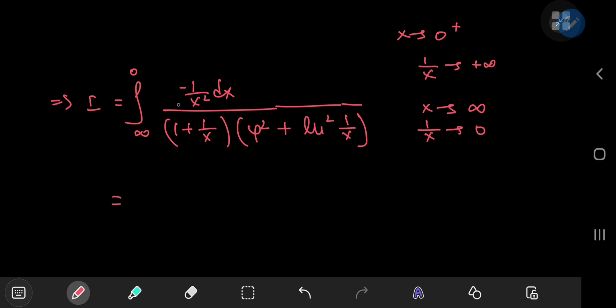Now, we have a negative sign here. So if we switch up the order of the limits of integration, we can get rid of that negative sign and make the integral look not so weird. So it's back to being the integral from 0 to infinity of 1 by x squared dx divided by x plus 1 by x times phi squared plus, now...